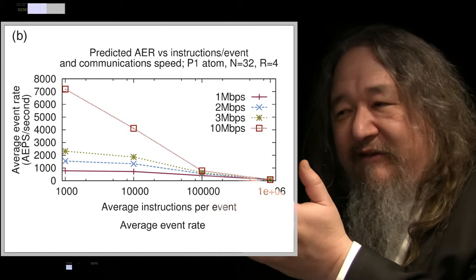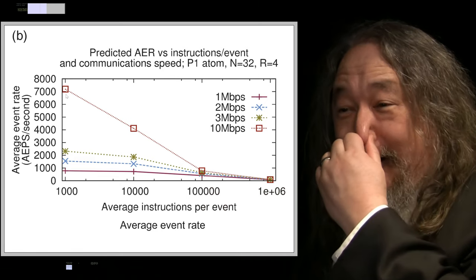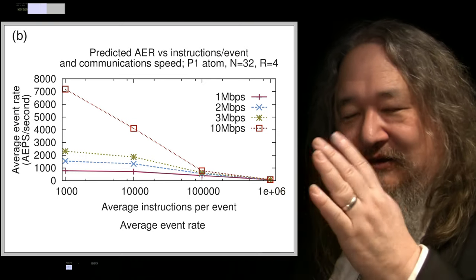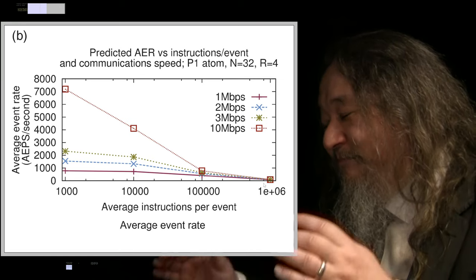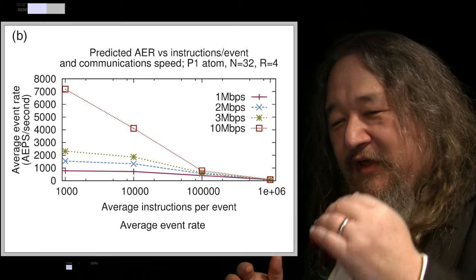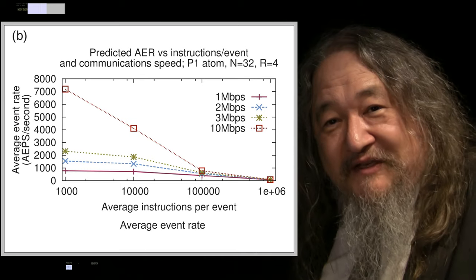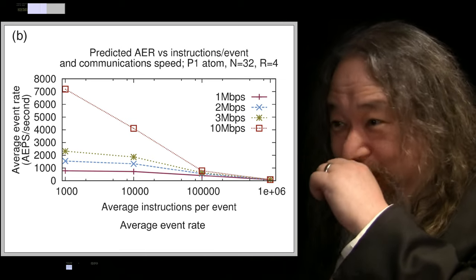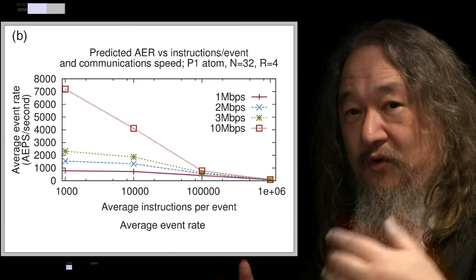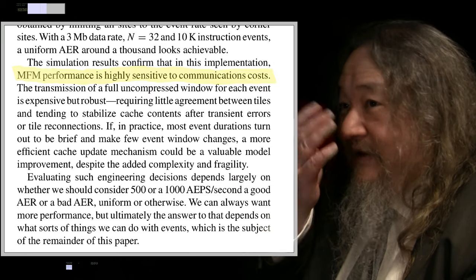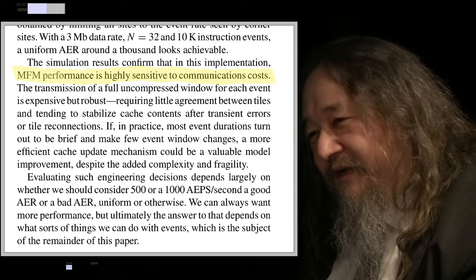With those kinds of numbers back in 2012, we got a graph showing that if everything worked right we might have gotten 7,000 aer — if you could do an event in a thousand instructions and had a 10 megabit line. In fact, we are much more down near the very close-to-zero end of the spectrum. But as we've been saying all along, for scientific and engineering purposes any number is a benchmark. The smaller it is now, the more room for fastest-growing improvement as we make changes going forward. And MFM performance is highly sensitive to communication costs — that I think we've kind of confirmed.